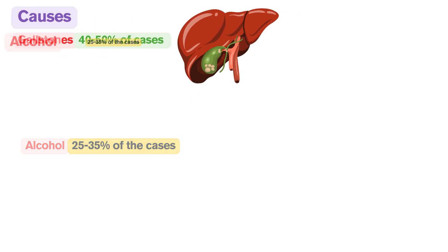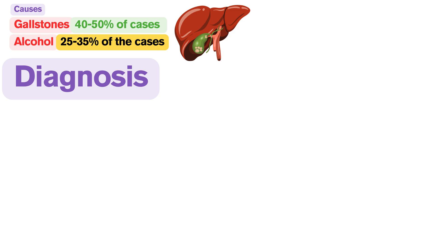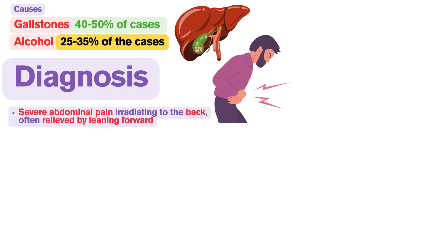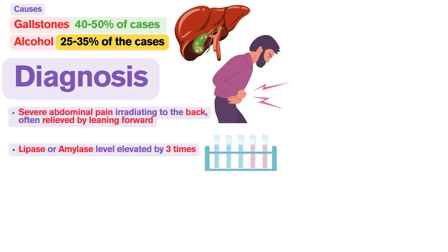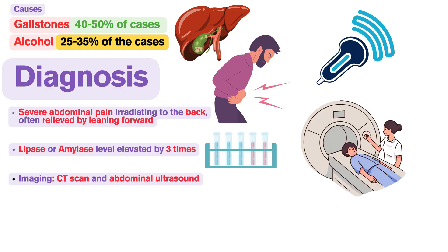The diagnosis of acute pancreatitis is made using clinical manifestations — severe upper epigastric pain irradiating to the back, often relieved by leaning forward — laboratory findings including increased lipase or amylase level by three times the upper limit of normal, and imaging that indicates pancreas inflammation, such as a CT scan or an abdominal ultrasound.